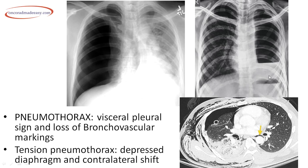When pneumothorax is accompanied by pleural effusion — showing an air-fluid level — this is hydropneumothorax. On CT of a trauma patient (lung window), you can identify normal lung parenchyma bilaterally, contusions, pneumothorax, and air in the chest wall which is indicative of surgical emphysema.